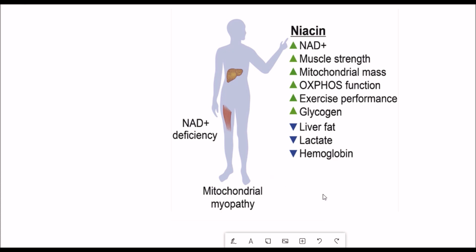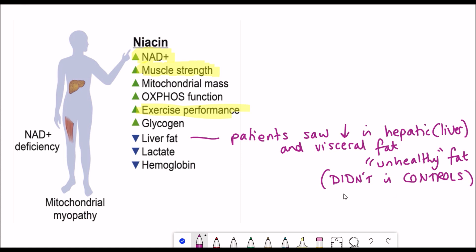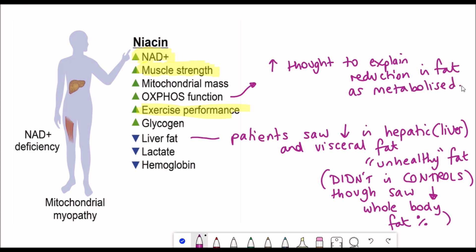So what other effects did they see? Interestingly, they saw a decrease in the patient's hepatic and visceral fat, otherwise referred to as the unhealthy fat. And they think that this could be due to the fact that from the improvement in the mitochondrial performance, they see increased oxidative phosphorylation, which is aerobic respiration, which could explain the increased metabolism and use of the fat. There wasn't a corresponding reduction in this unhealthy fat in the controls, although they did see a whole body reduction in the fat percentage.